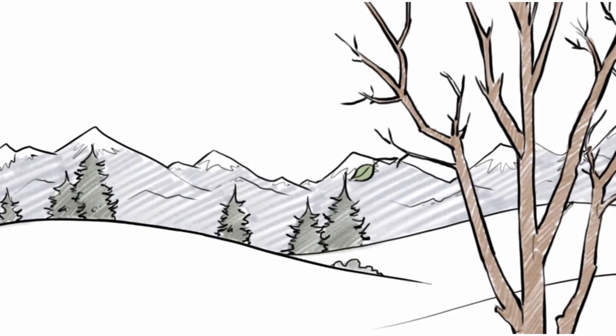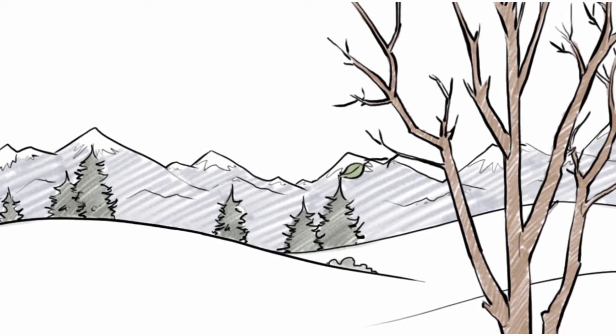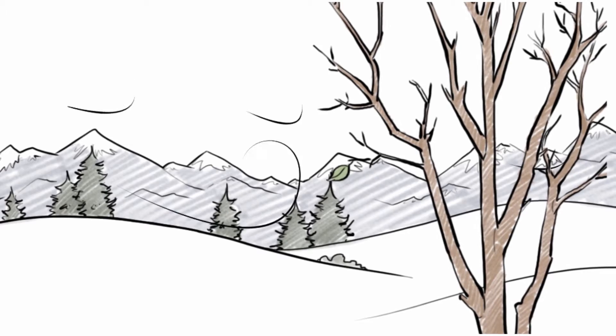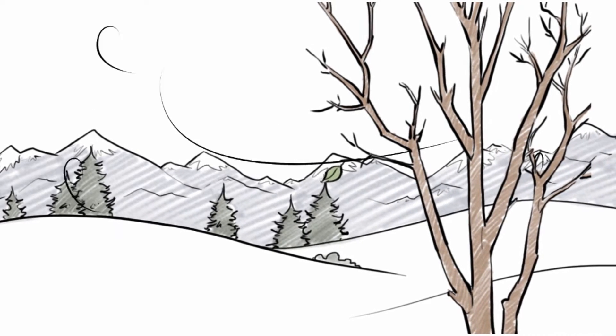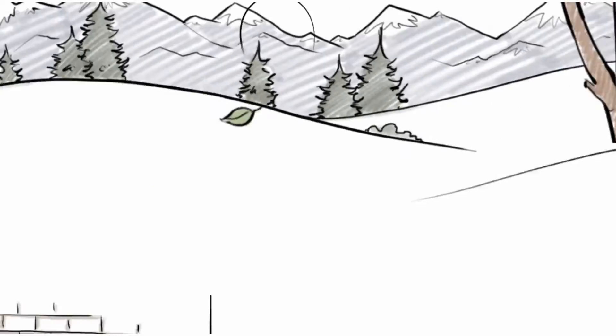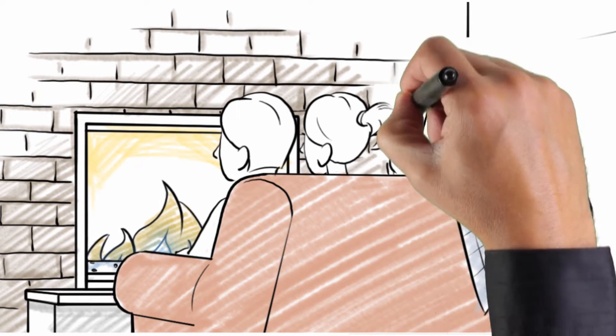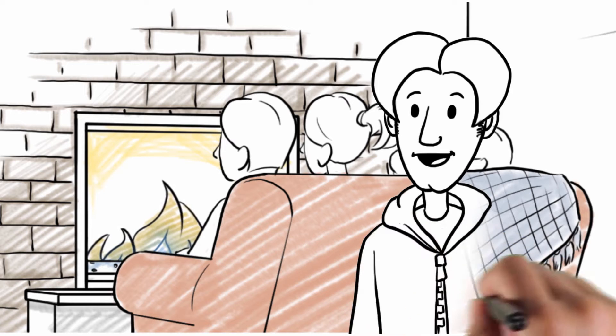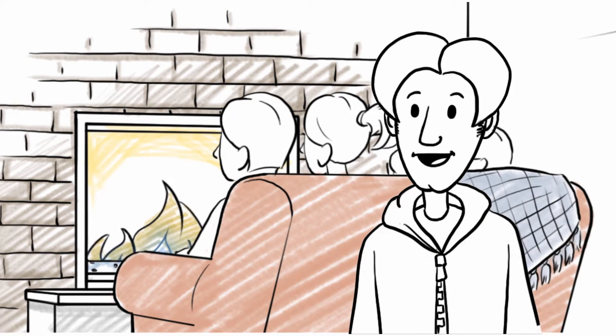Keith loves the crisp autumn air. And with the temperatures cooling, Canadians will start covering their barbecues and firing up their furnaces and fireplaces. Keith knows that Alberta has a lot of natural gas, and like most Albertans, he relies on it to keep his family warm during the cooler months.